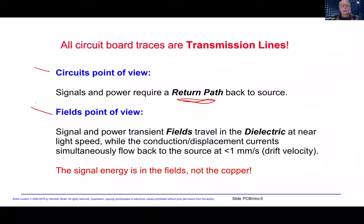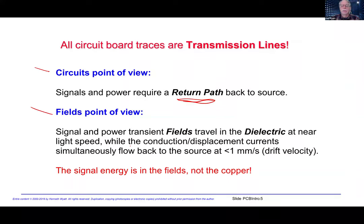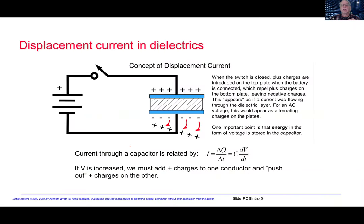There's also the field's point of view, and this is an important concept to understand. Signal and power transient fields actually travel as electromagnetic waves in the dielectric space at near light speed, while the conduction and displacement currents simultaneously flow back to the source at a very slow velocity called the drift velocity — much less than one millimeter per second. So it's not the electrons in copper that carry your signal; the signal is actually the electromagnetic wave trapped between the circuit trace and return plane.